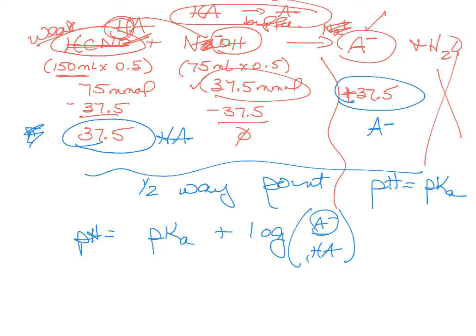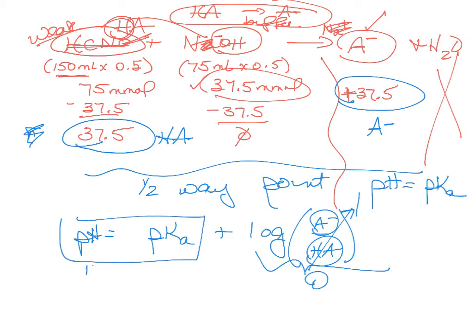If these two have equal concentrations, the ratio is 1. Log of 1 is 0, so we're left with pH equals pKa at the halfway point.